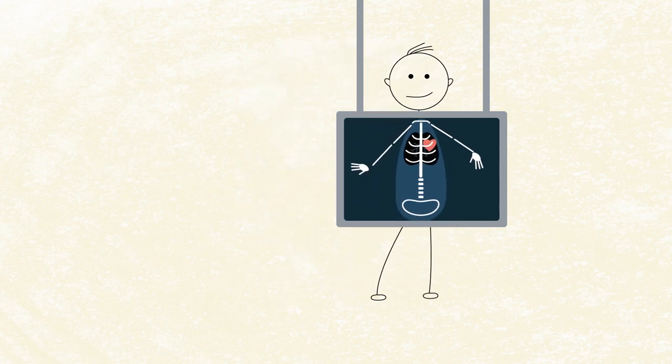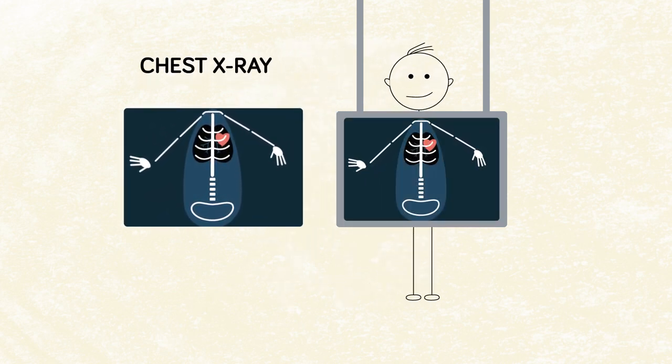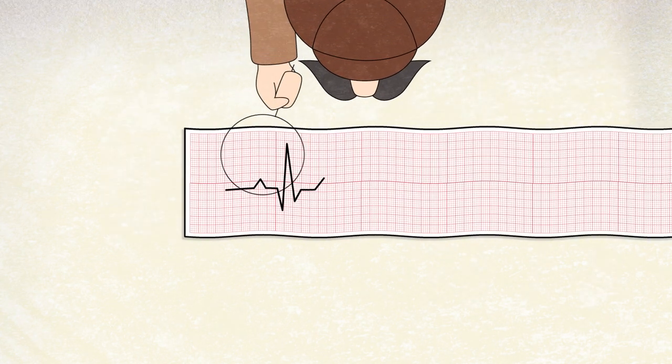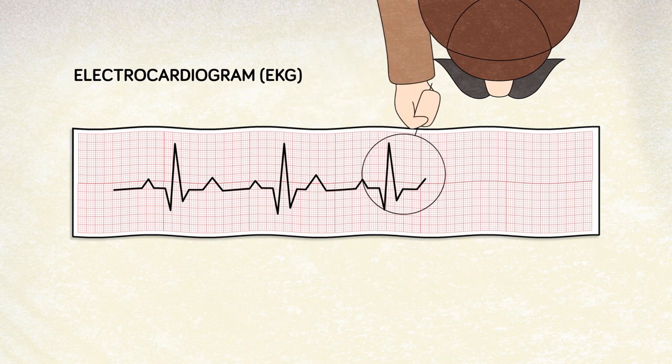A chest x-ray provides a clue by showing a view of the size and status of the heart and lungs, as will an EKG, which records the electrical activity of the heart.